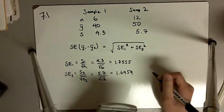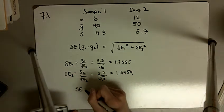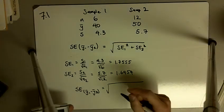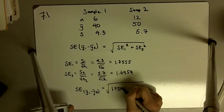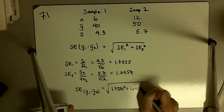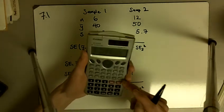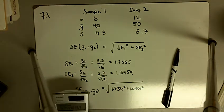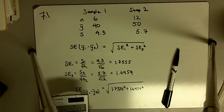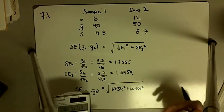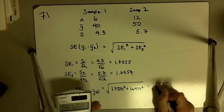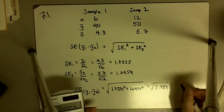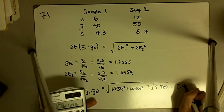And so SE1, 1.7555 squared, plus SE2 squared... Let me just square this and add... I get the square root of 5.789, which equals 2.406.